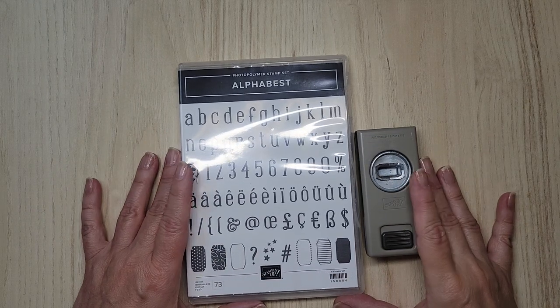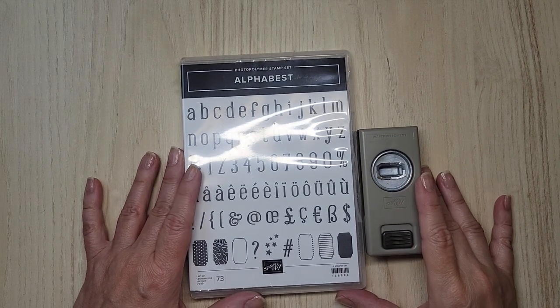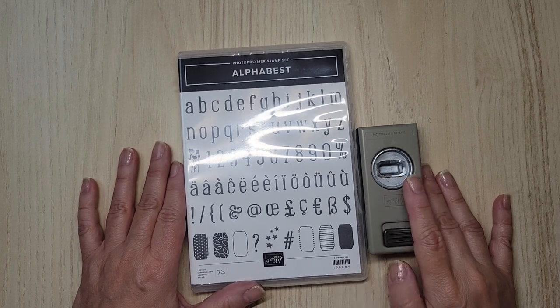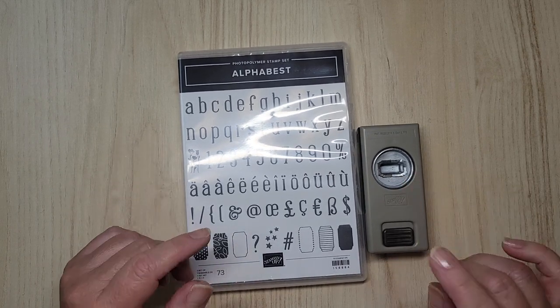Today we are going to be using the Alphabest bundle. This might be one you've overlooked in the catalog. You will find it on page 115.